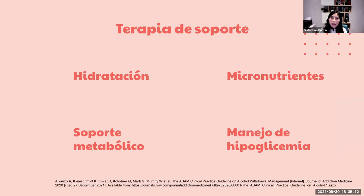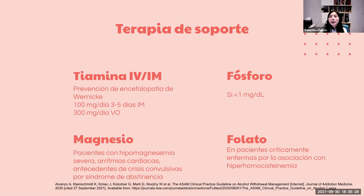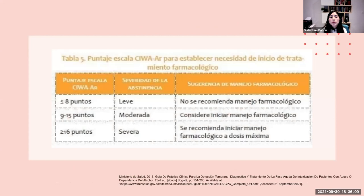La terapia de soporte incluye hidratación con líquidos intravenosos y soporte metabólico. La tiamina se recomienda para prevención de encefalopatía de Wernicke: 100 mg/día intramuscular por 3 a 5 días o 300 mg/día vía oral. El magnesio se repone en pacientes con hipomagnesemia severa, arritmias cardíacas o antecedentes de crisis convulsivas. El fósforo se repone solo si está por debajo de 1 mg/dL; entre 1 y 2 mg/dL puede hacerse por vía oral. El folato es importante en pacientes críticamente enfermos por su asociación con hiperhomocisteinemia. Según el puntaje CIWA-Ar: el leve no requiere manejo farmacológico, el moderado lo considera, y el severo siempre inicia farmacología a dosis máximas.